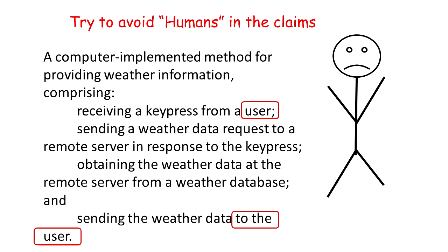While it is true that ultimately the user initiates the activity by pressing the button and the information is ultimately delivered to the user, for the purposes of patent claims it is often better to try to write the claims without the humans in the claims if possible.